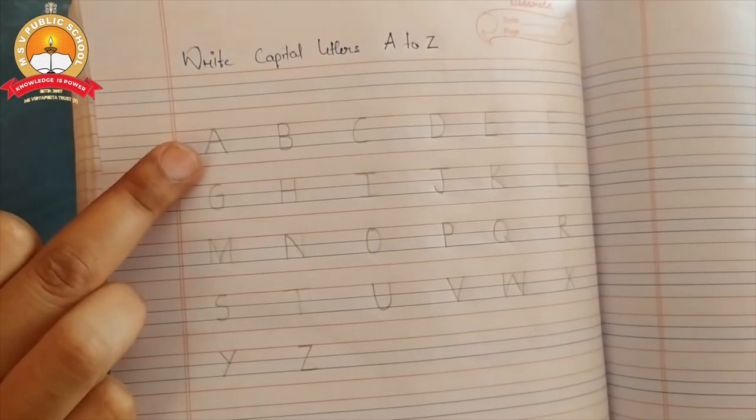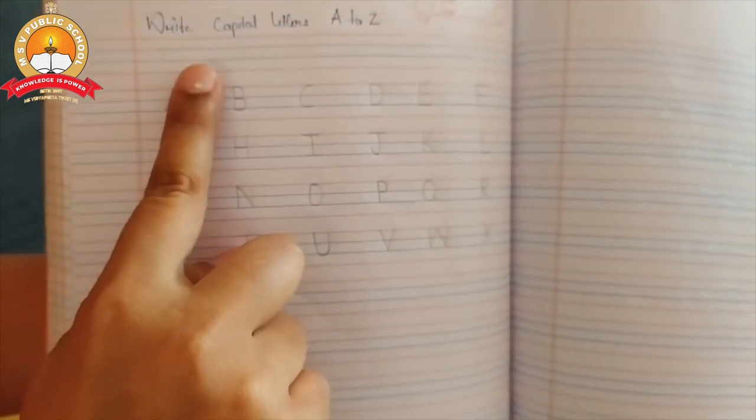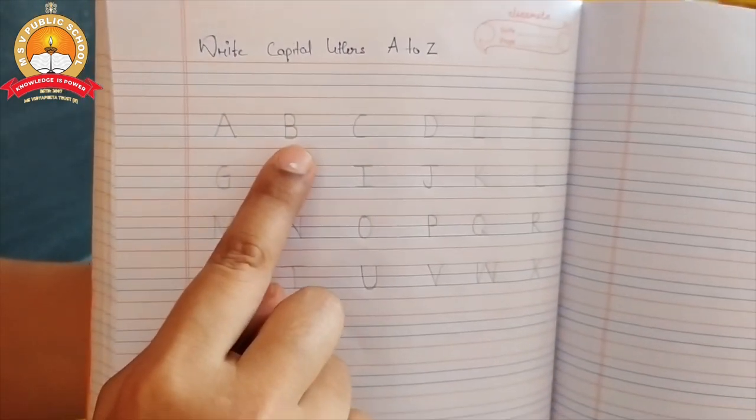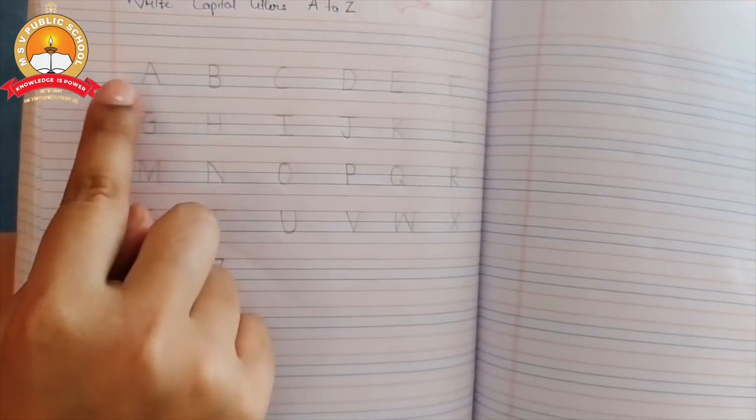after writing the letter A, always use your fingers to keep a gap. And after you have finished writing A, keep your fingers here and after that, you can write the letter B. In the same way, one line, you should write six letters.